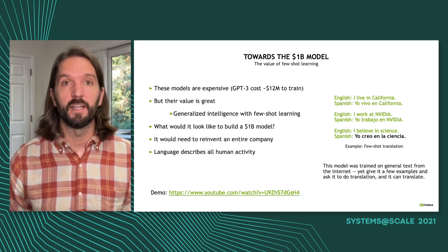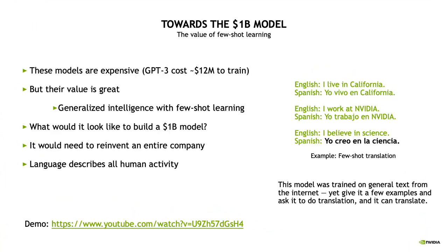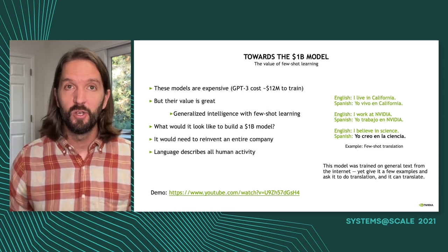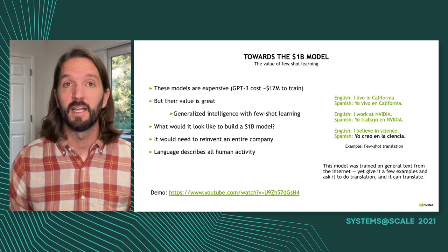These models are very expensive to train — GPT-3 costs about $12 million — but their value is really good. They do a great job of understanding and generating text. This model was trained on text from the internet, and as we give it a few examples of English-to-Spanish translation, it knows we want to translate. The green is what we've given it, and the black text is what it outputs. Text is a very generic medium describing basically all of human activity, so good language models can spread into many different domains.